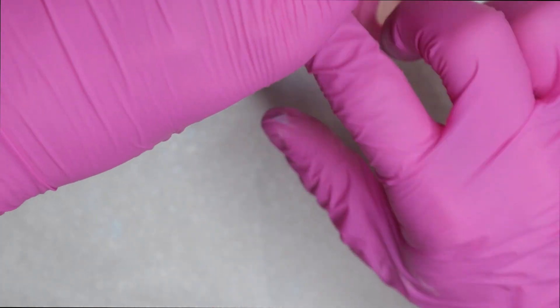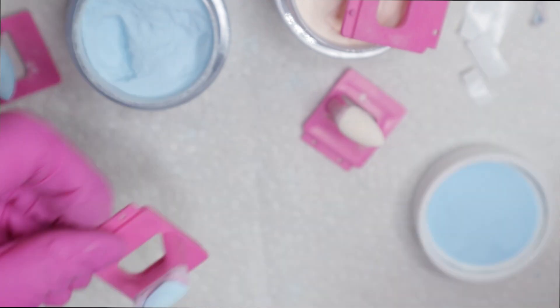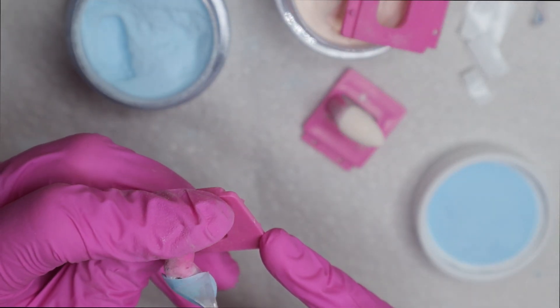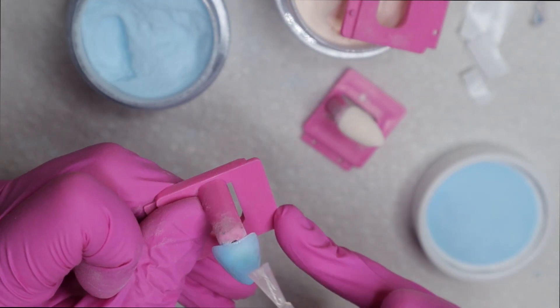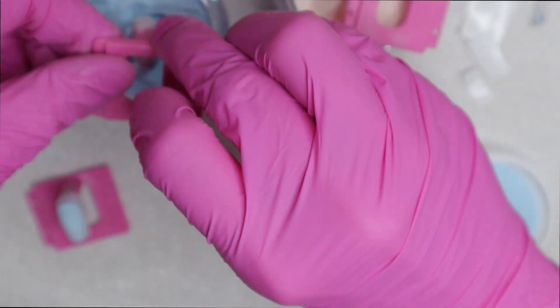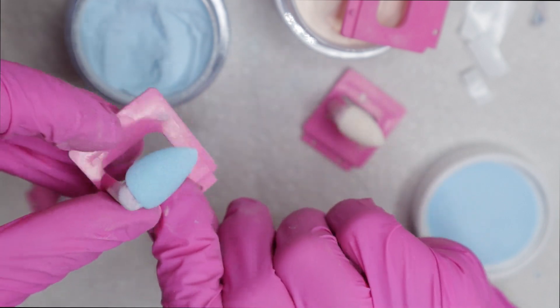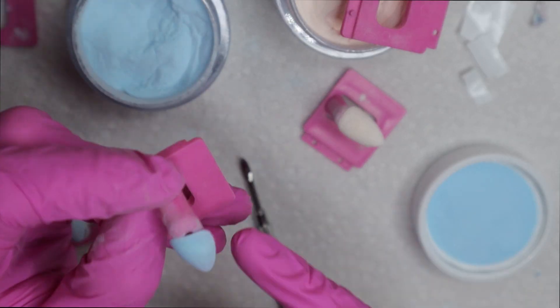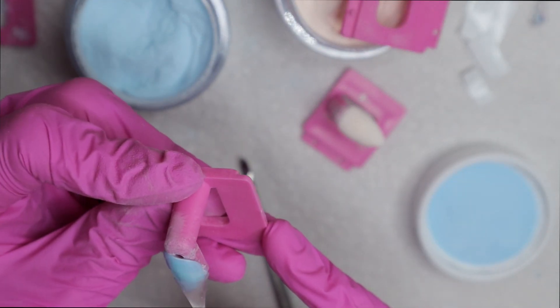But I also want to show you guys that you totally can dip on press-ons and have them not be too thick or too bulky. I showed you guys earlier that I was using the Triple Vitamin dip liquids. I just happen to have a set in my collection, so I pulled them out. They are known for being thin dip liquids, so I think that's what makes the world of a difference on making your press-ons look thin versus thick.